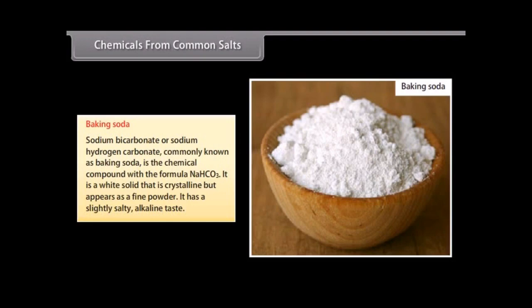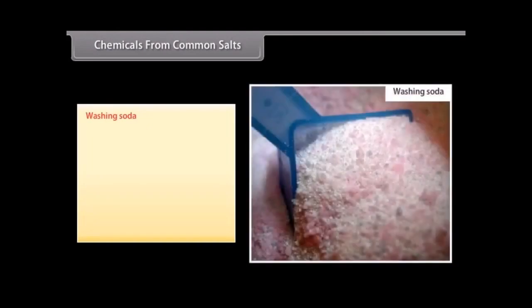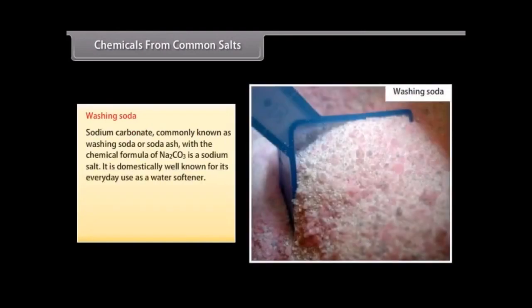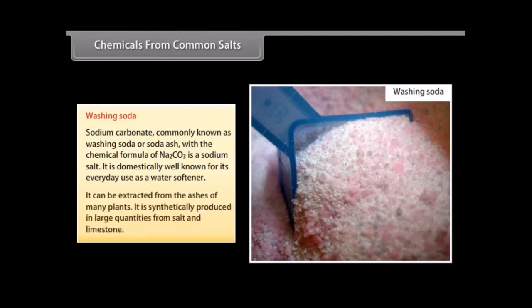Washing soda: Sodium carbonate commonly known as washing soda or soda ash with the chemical formula of Na2CO3 is a sodium salt. It is domestically well known for its everyday use as a water softener. It can be extracted from the ashes of many plants. It is synthetically produced in large quantities from salt and limestone.